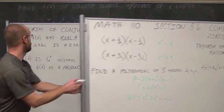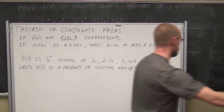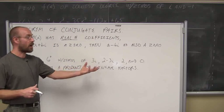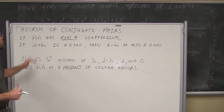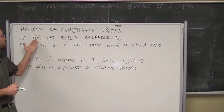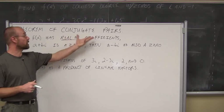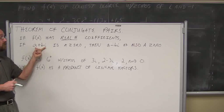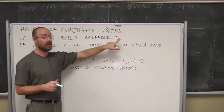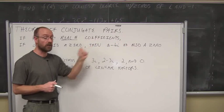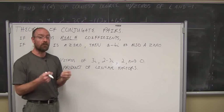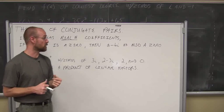Notice in that example we had negative i and positive i — these were conjugate pairs. The theorem of conjugate pairs says that in the complex number system, if a function has real number coefficients and a plus bi is a zero, then its conjugate, a minus bi, must also be a zero. So if we find one imaginary solution in a polynomial, we must find its conjugate as a solution as well.